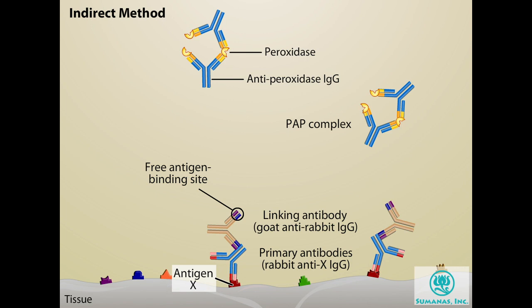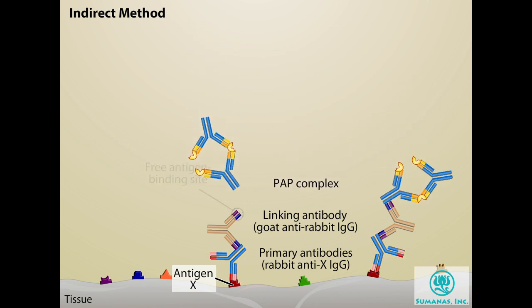The antibodies in this complex come from the same species as the primary antibody, which is rabbit in this case. Therefore, the free ends of the linking antibodies will bind both to the antigen on the tissue as well as the antibodies in the PAP complex.